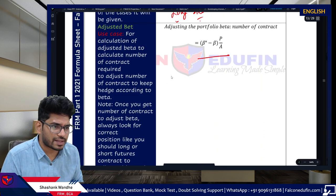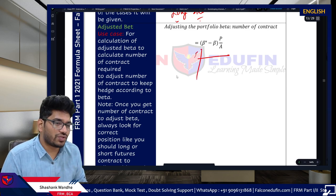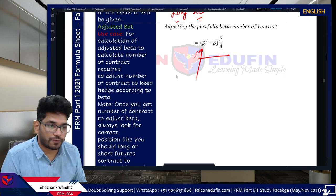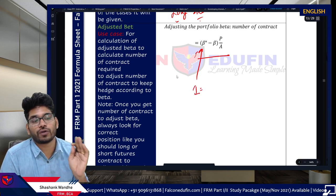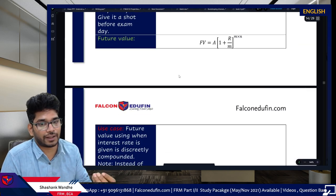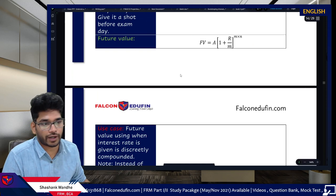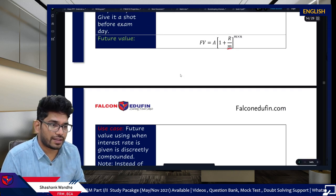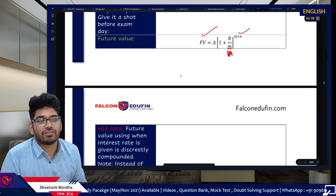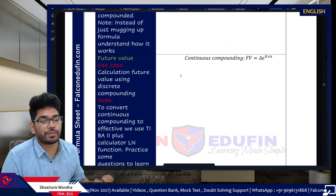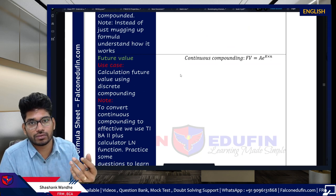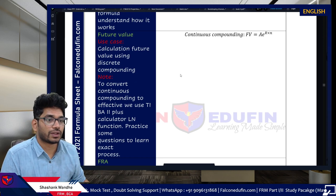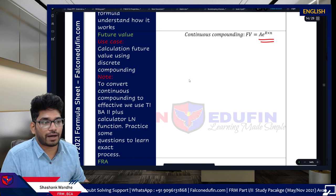For beta adjustment of a portfolio: identify the existing beta (beta P) and the target beta (beta star), then calculate how many futures contracts to add or short. Future value formula: remember this is divided by n — but the general approach should be to understand the concept, not memorize the formula, because the nature of exam questions requires conceptual understanding. Continuous compounding: F = A × e^(r×n), where r is the rate and n is the time period.